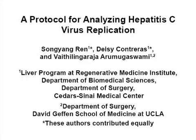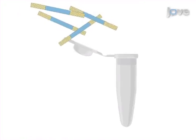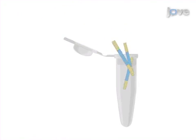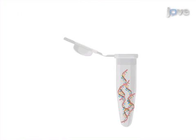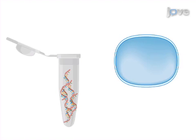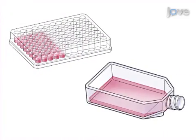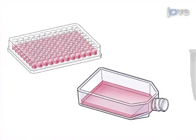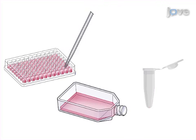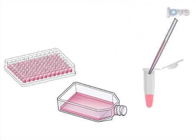The overall goal of this procedure is to investigate various stages of the hepatitis C virus replication cycle. This is accomplished by first generating HCV genomic RNA transcripts from linearized HCV plasmid constructs. The second step is to transfect the cells with HCV RNA. Next, the cells are plated for various time points and assays. The final step is to collect the cell culture supernatant for measuring viral titer and harvest transfected cells for protein and RNA.